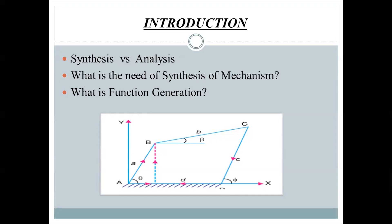So what is function generation? This is an important concept in my project. As you can see in the diagram, a is the input link, b is the coupler link, c is the output link, and d is the grounded link. In function generation, the output link c should reciprocate, rotate, or move as a function of a — that is, y = f(x), where y represents the motion of the output link c and x represents the motion or angle of the input link a.